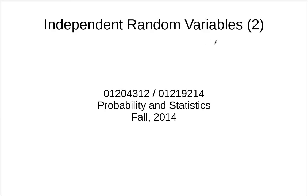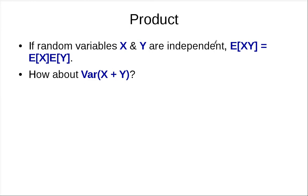In this part, we will discuss the variance of independent random variables. Recall that from the last segment we showed that if two random variables x and y are independent, the expected value of x times y equals the expected value of x times the expected value of y.